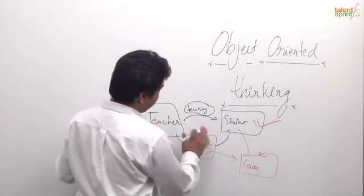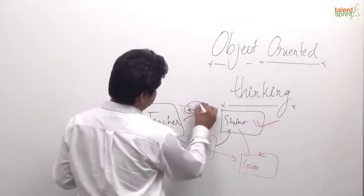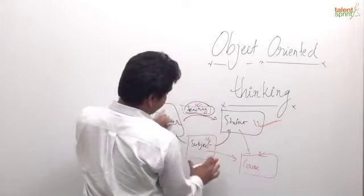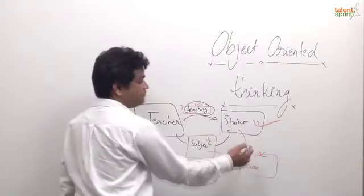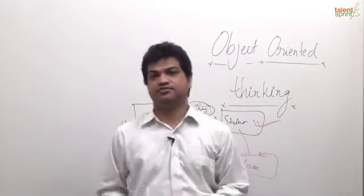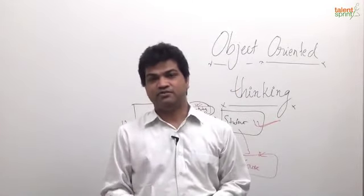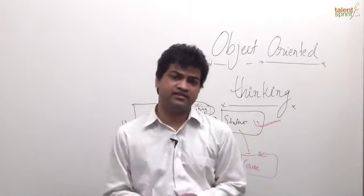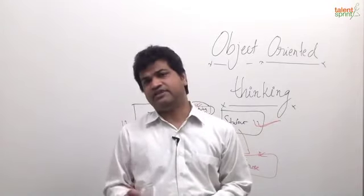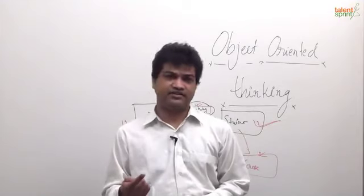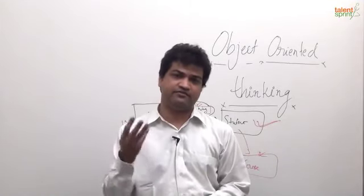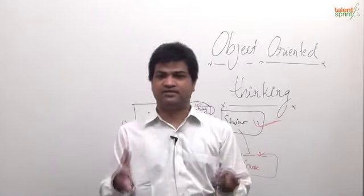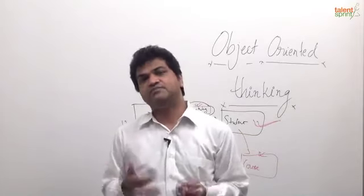If we had not done that — if we had directly gone and started focusing on what teaching is, worrying later about who is teaching whom — that becomes more of a functional approach. To make a programming language object oriented, there are four things which are very essential: the first is called abstraction, the second is called inheritance, the third is called encapsulation, and the fourth is called polymorphism.